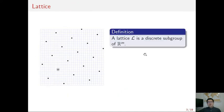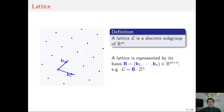Let's start with some background. A lattice is a discrete subgroup in Euclidean space, and it can be expressed by a basis. A lattice has infinitely many bases; we call a basis consisting of short vectors a good basis.